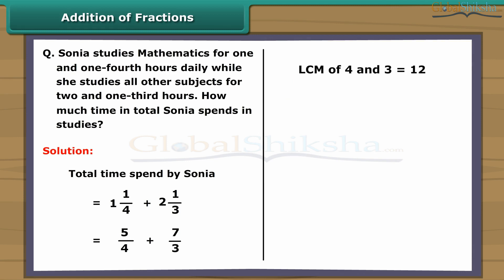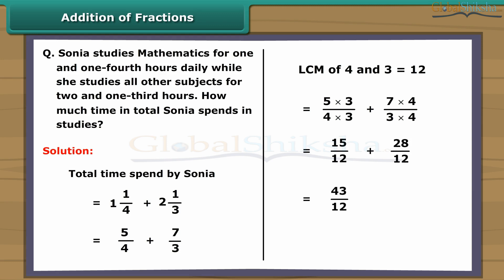Total time spent by Sonia equals one and one-fourth plus two and one-third hours, which equals five-fourths plus seven-thirds. Since the denominators are not the same, we take the LCM of four and three, which is twelve. This gives fifteen-twelfths plus twenty-eight-twelfths, which equals forty-three-twelfths. Simplifying, we get three and seven-twelfths.